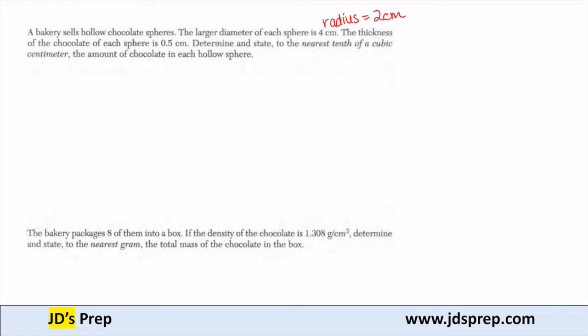The thickness of the chocolate of each sphere is 0.5 centimeters. Determine and state to the nearest tenth of a cubic centimeter the amount of chocolate in each hollow sphere.